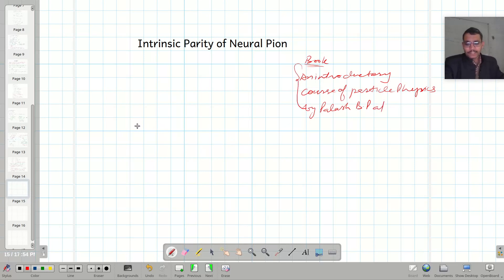So consider decay of neutral pions. Means pi0 gives us the two gamma ray photons. So in center of mass frame.